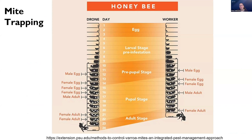Moving up the pyramid to mechanical controls, the first — and I think highly valuable — strategy is mite trapping. Knowing our pest well: workers are an egg for three days, then a larva, then get capped over — this is when the mite enters the cell right before capping and she reproduces inside. She'll lay a male egg first, then every 20 hours lay another egg that becomes a female. In worker cells, which take only 21 days from egg to emergence, on average the number of daughters that can be made is 1.2 — so almost always she only makes one offspring in a worker cell.